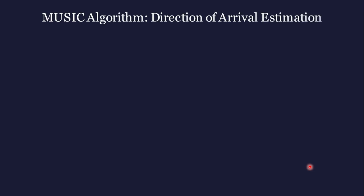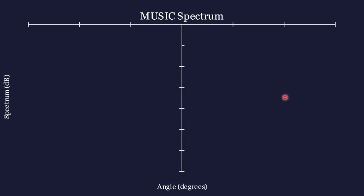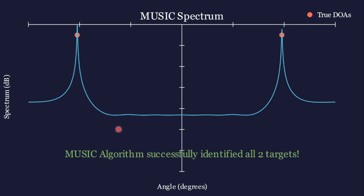A simulation was done in Python. The array has eight elements with half-wavelength spacing, and the number of snapshots is sufficient. The MUSIC spectrum shows clear peaks at −61.4° and 58.6°. That's how you obtain the direction estimates. The code will also be included if possible.